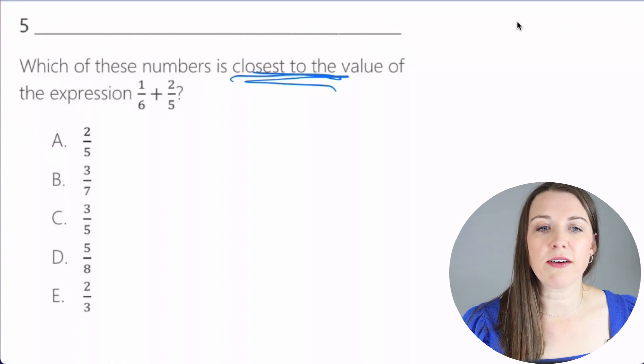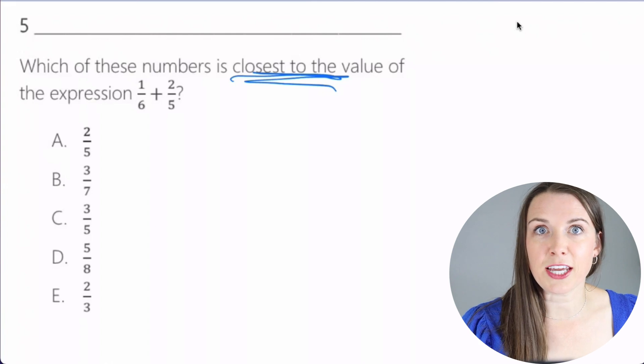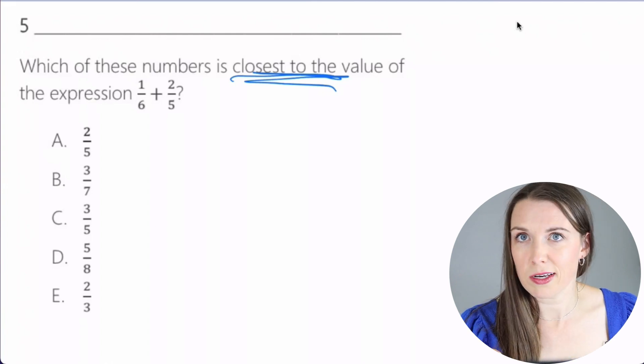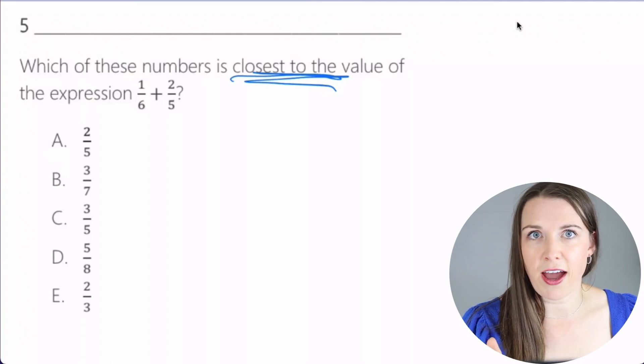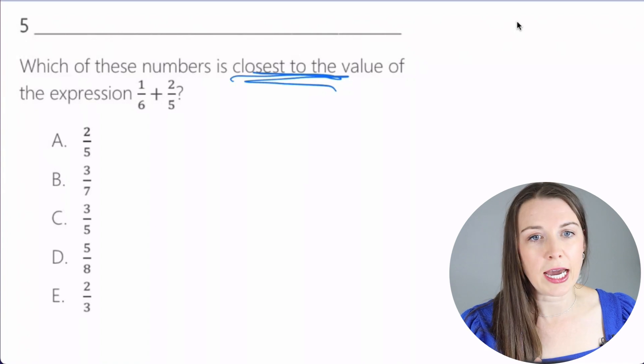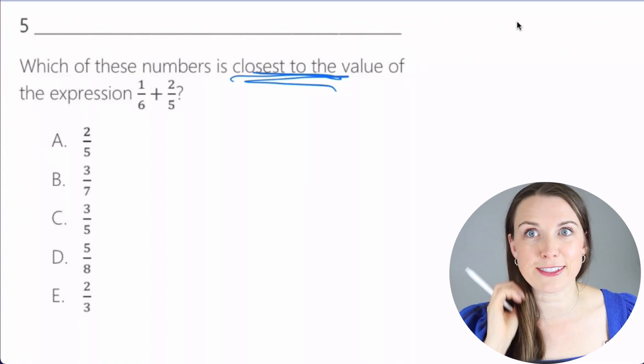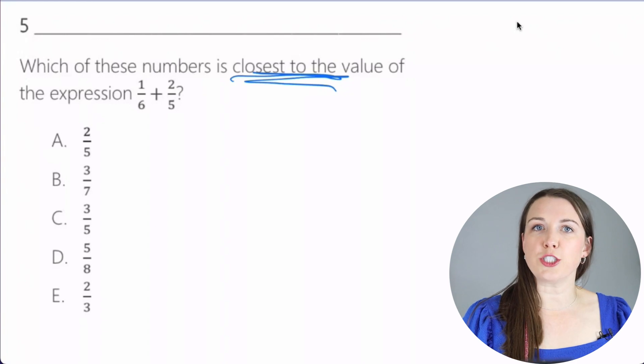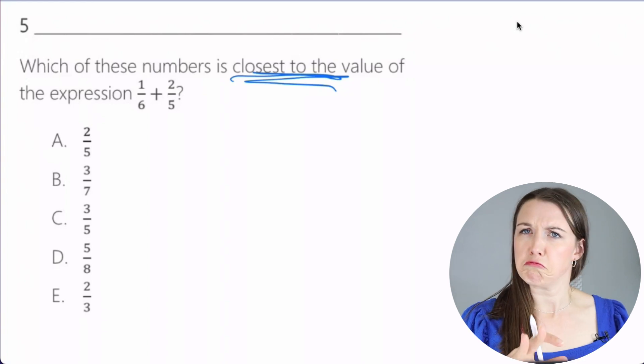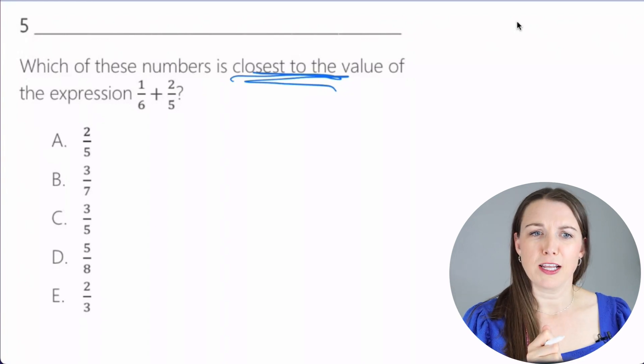Okay. So here we have the denominator, which is the number on the bottom, is 6 and 5. And we know that we can't add a 6 and a 5 together if it's a fraction and that's the denominator, right? So what we're going to do here is we're just going to kind of do our best little guess.